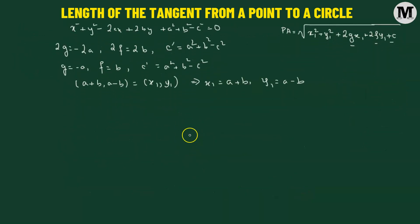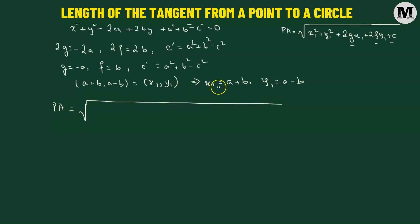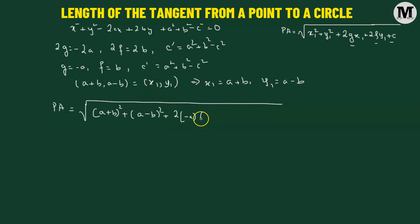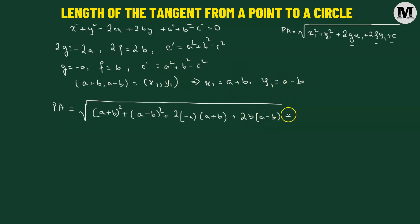Substituting these values into the formula, the length of the tangent PA equals the square root of: x1 squared which is a plus b whole squared, plus y1 squared which is a minus b whole squared, plus 2 times g — which is negative a — multiplied by x1, which is a plus b, plus 2 times f — which is b — multiplied by y1, which is a minus b, plus c prime, which is a squared plus b squared minus c squared.